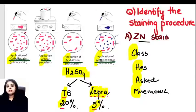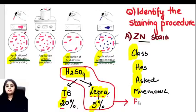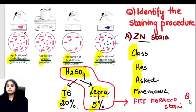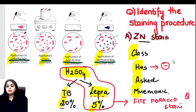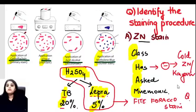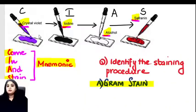ZN stain variations: the same stain done for lepra with 5% H₂SO₄ is called the Fite-Faraco stain. If you remove the heat step (cold version), it is called the Kinyoun stain — K for cold, heating part removed. So to summarize: gram staining mnemonic 'Come In And Stain', ZN staining mnemonic 'Class Has Asked Mnemonic' — these two stains are the most exam-important.